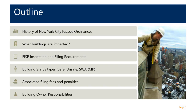During today's presentation, we will discuss the background of this ordinance, how it came to be, and the various iterations following that. We'll review what buildings are under this requirement, detail the nuts and bolts of typical inspection and filing requirements, review facade filing status classifications including safe, unsafe, and SWAMP, review typical filing fees and penalties, and finish by detailing building owner responsibilities and recommended next steps for building owners, co-op boards, managing agents, and anyone involved in buildings that this ordinance applies to.